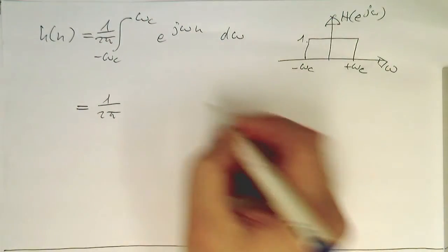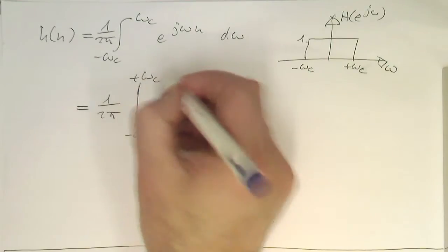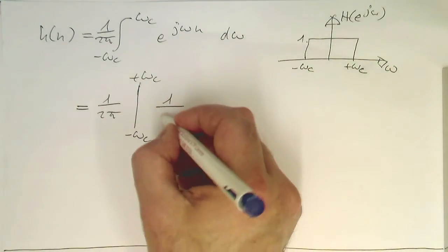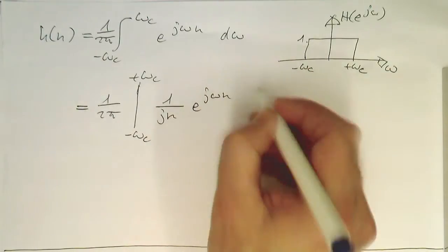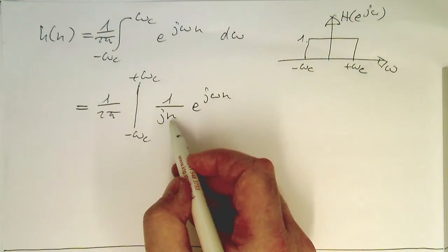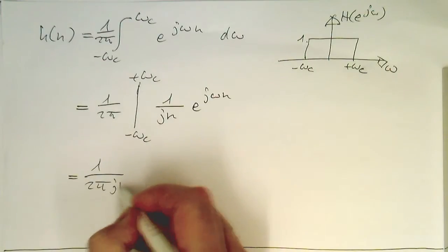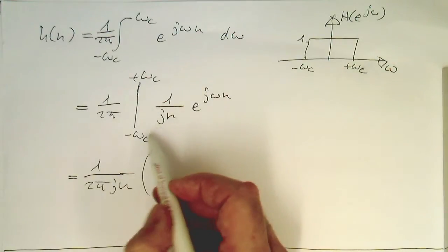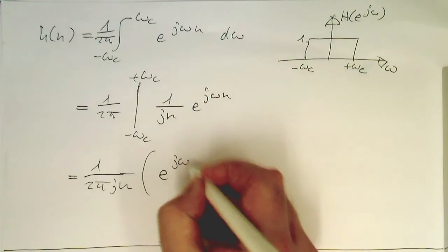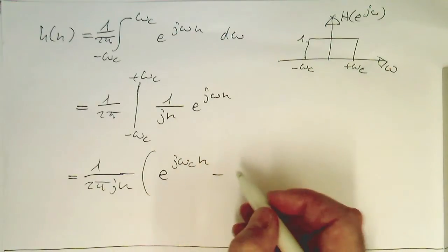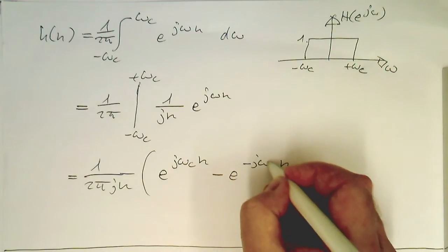So we have 1 over 2 pi, with our boundaries from minus omega c to plus omega c. The integral is solved using the chain rule, giving 1 over j n times e to the j omega n. We can move the 1 over j n out, giving 1 over 2 pi j n, and then substitute the two boundary values: e to the j omega c n minus e to the minus j omega c n.